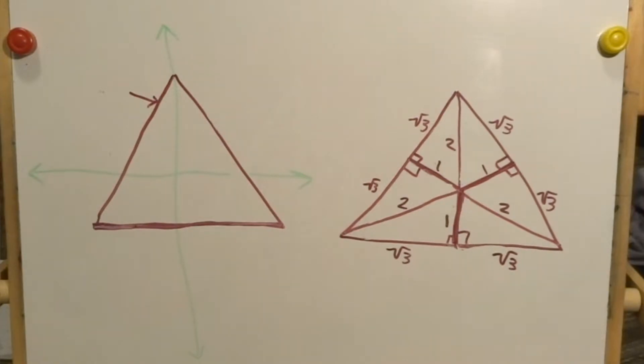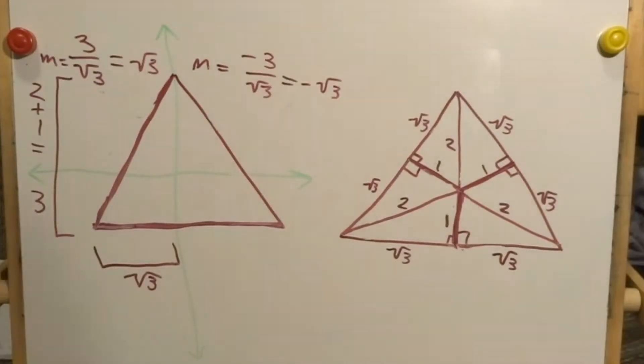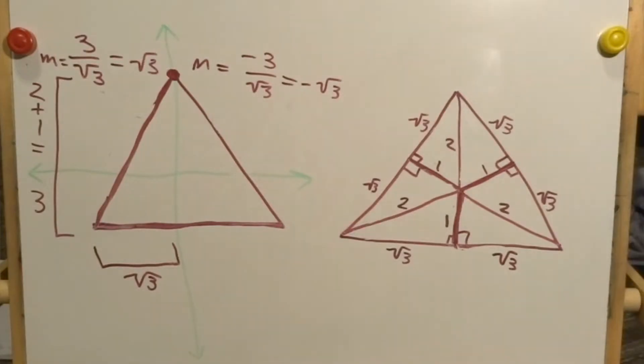But we have to find the slope to these two lines. This line goes up three and over the square root of three. So the slope is three divided by root three, which simplifies to the square root of three. The other line is similar, it just goes down three and over root three. So its slope is going to be negative root three.